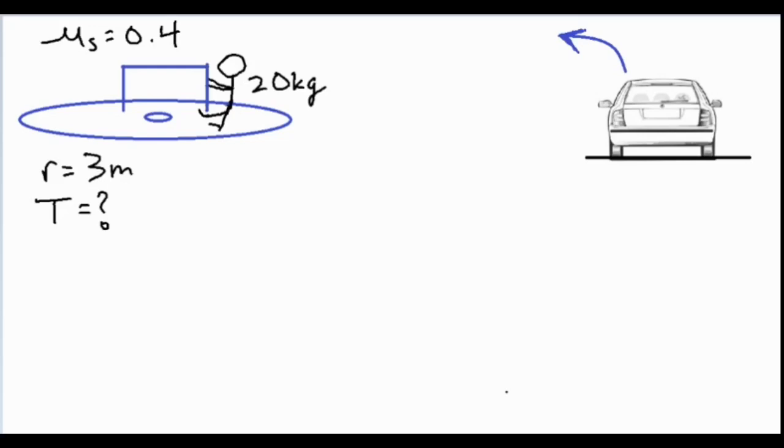So the first thing you do is start off with your force diagram and we have an Fg, force of gravity straight down, the normal force perpendicular to the surface holding the person up, and then as their body is trying to slide outward we have the force of static friction.